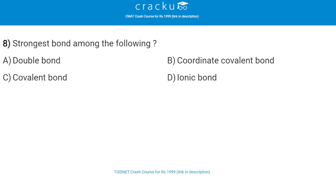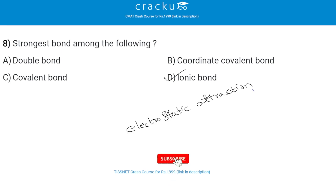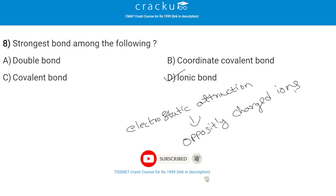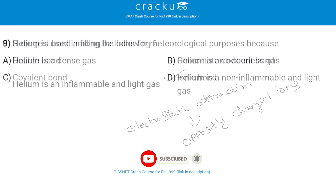Next: strongest bond among the following — the correct answer is ionic bond, that is option D. Ionic bonding is a type of chemical bonding that involves the electrostatic attraction between oppositely charged ions.